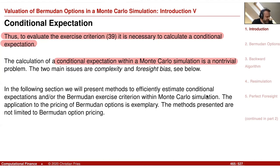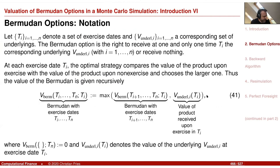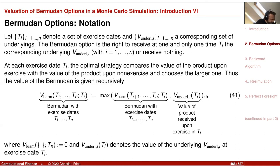To evaluate the exercise criteria we have to perform a conditional expectation. The exercise criteria is: take the maximum of the future value (the value if you continue) evaluated conditional on your current point in time, versus what you get if you exercise. Conditional expectation is known to be non-trivial in a Monte Carlo simulation. There is a very nice solution based on regression, which we will see later.